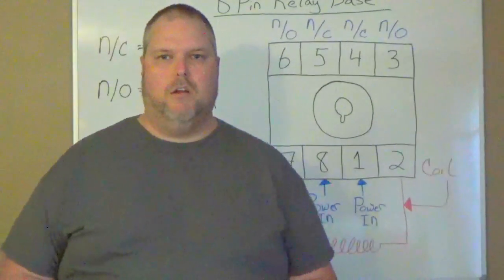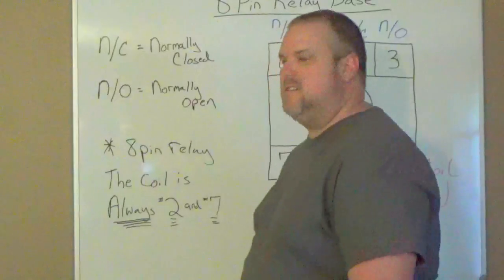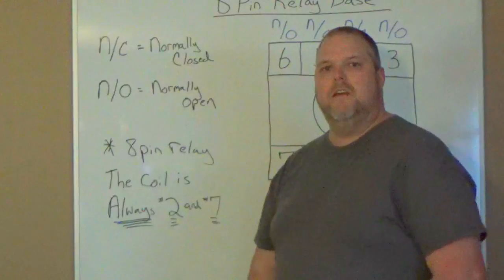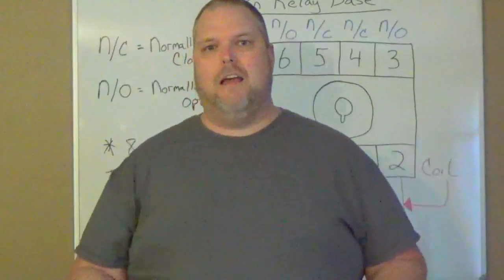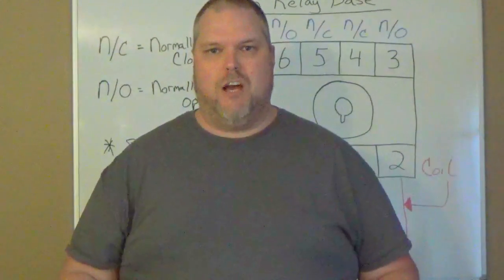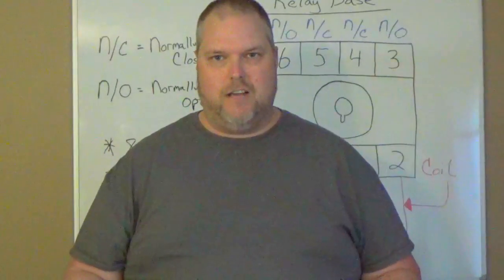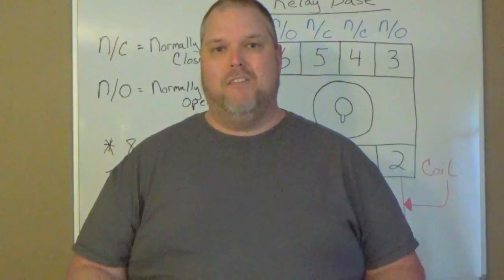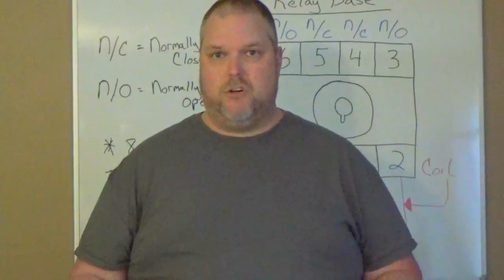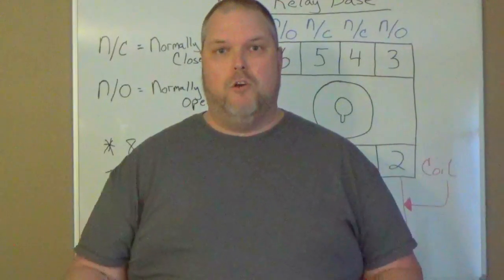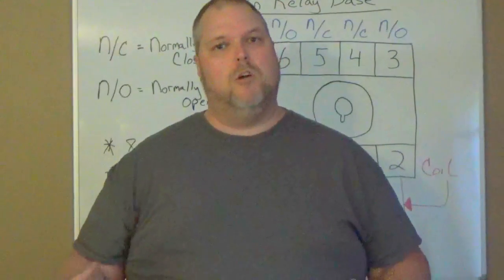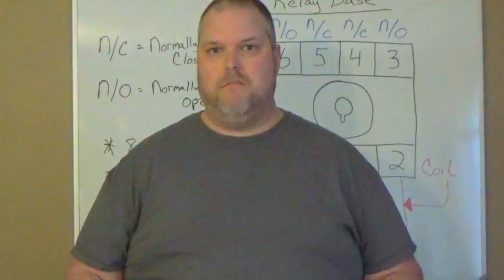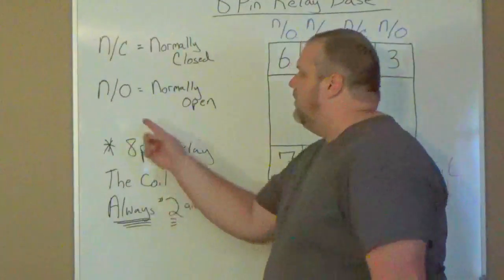We're going to start with the basics: normally closed. Normally closed means that in a relay, the relay is in a de-energized state. If it's de-energized, that means power is actually flowing through the common terminal or the power-in terminal and running through the normally closed contacts, which could be turning on a light, switch, motor, or whatever it may need to be running.